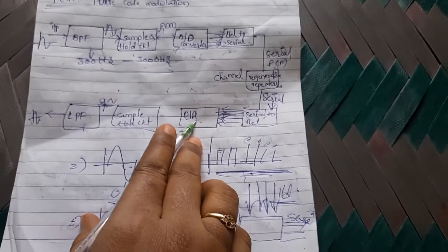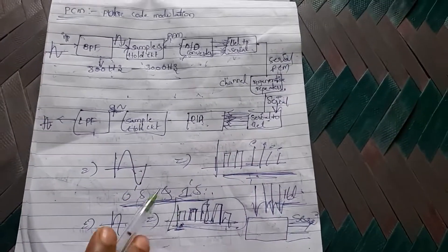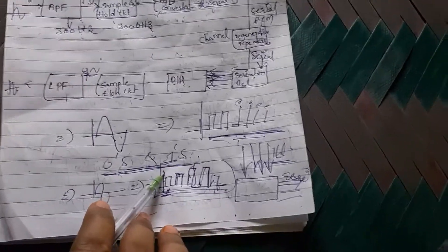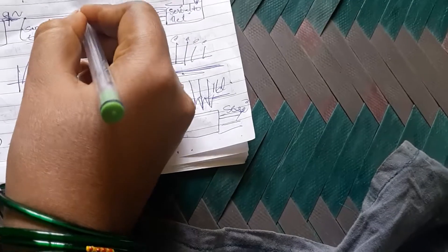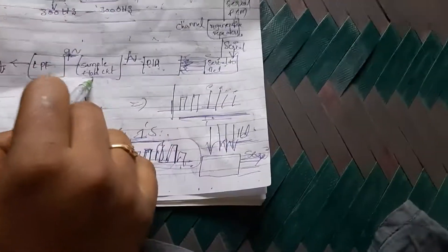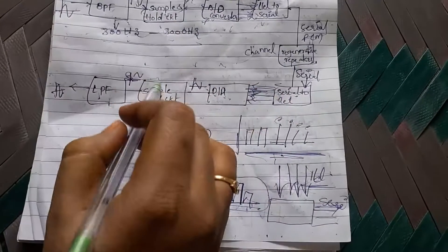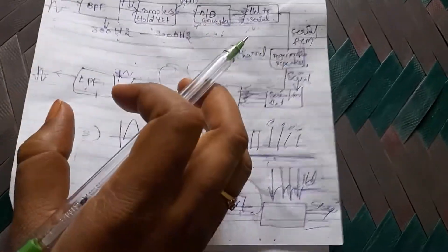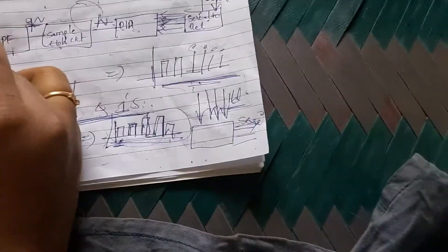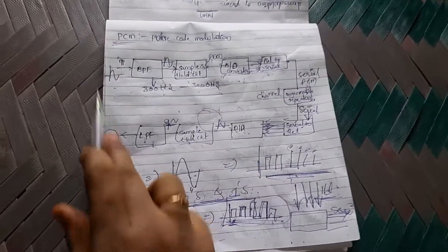The D2A (Digital to Analog) converter takes the digital signal — in the form of zeros and ones — and converts it back into an analog signal. That analog signal is given to the Sample and Hold circuit, and then to the Low Pass Filter, which allows only a certain range of frequencies, producing the filtered analog output.